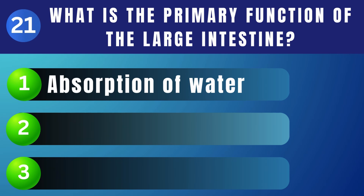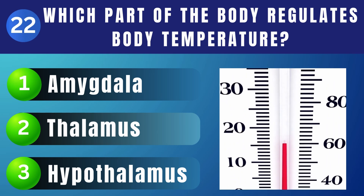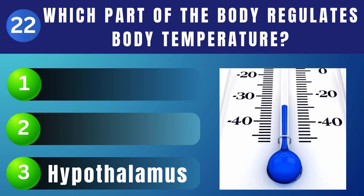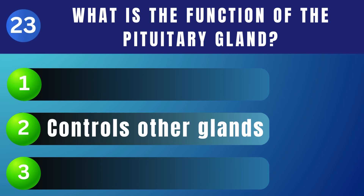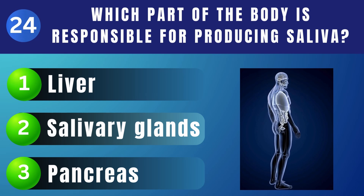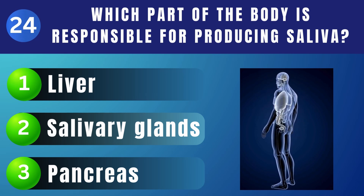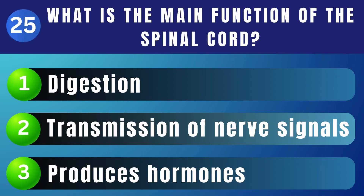Absorption of water. Which part of the body regulates body temperature? Hypothalamus. What is the function of the pituitary gland? Controls other glands. Which part of the body is responsible for producing saliva? Salivary glands.